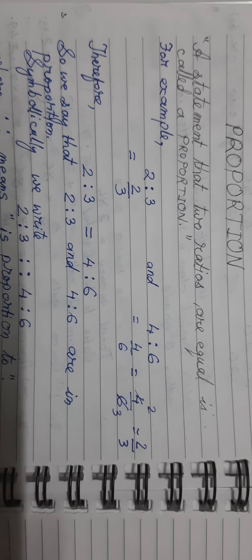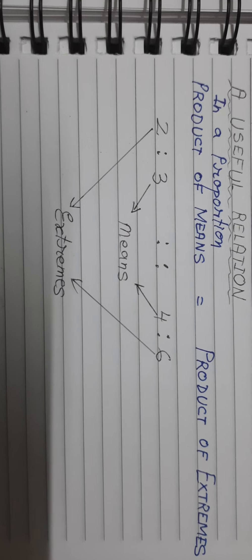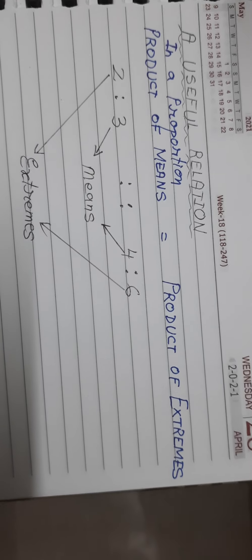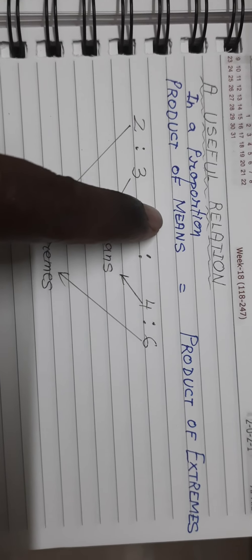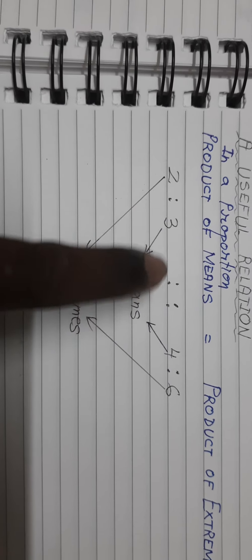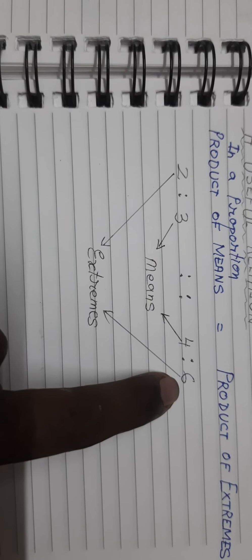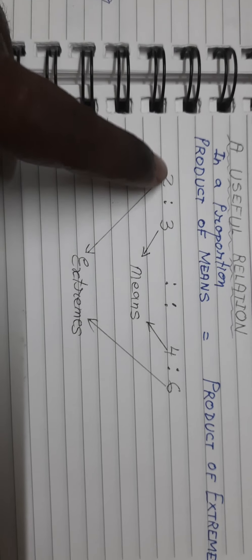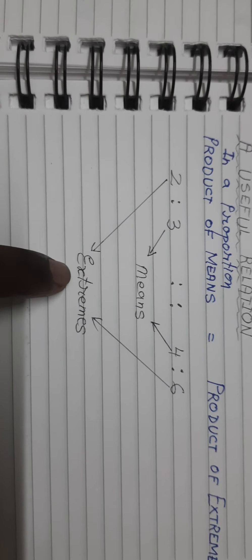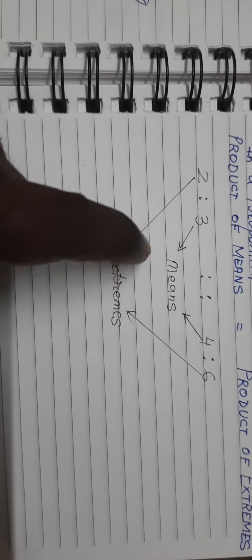I hope it's clear what a proportion is. In proportion, there is an important relation to be learned, and that relation is: product of means equals product of extremes. First we need to know what are means and what are extremes. In our current example, 2 is to 3 in proportion with 4 is to 6. The two numbers on the extreme left and extreme right are called extremes because they are in the corner positions, and the two numbers in the middle are called means.